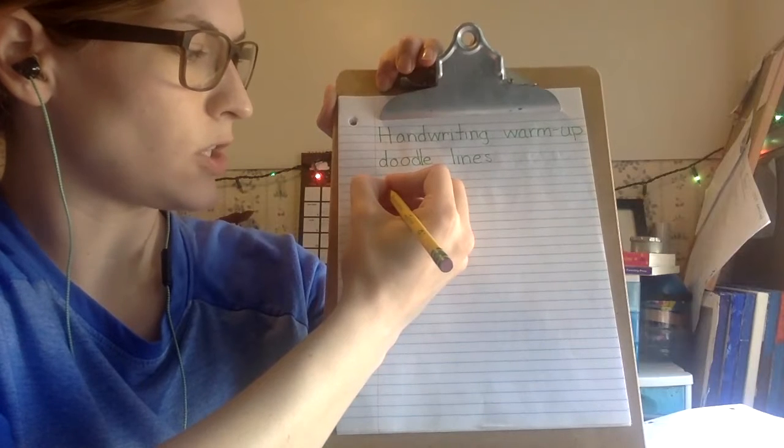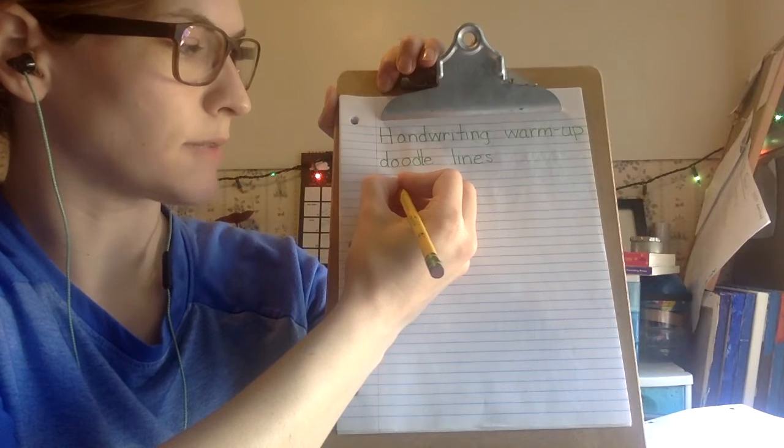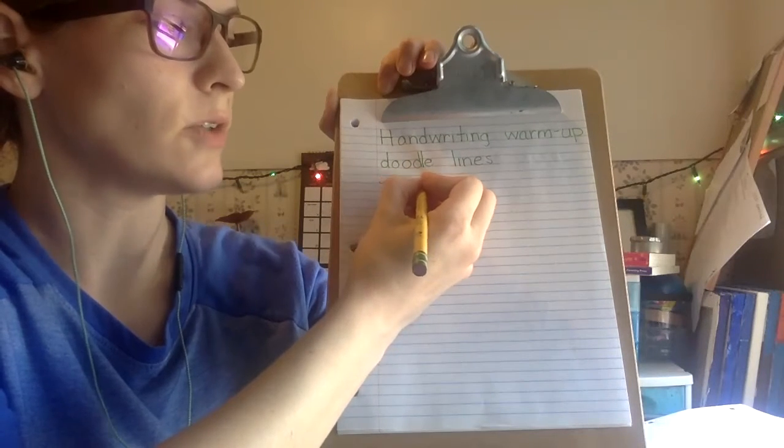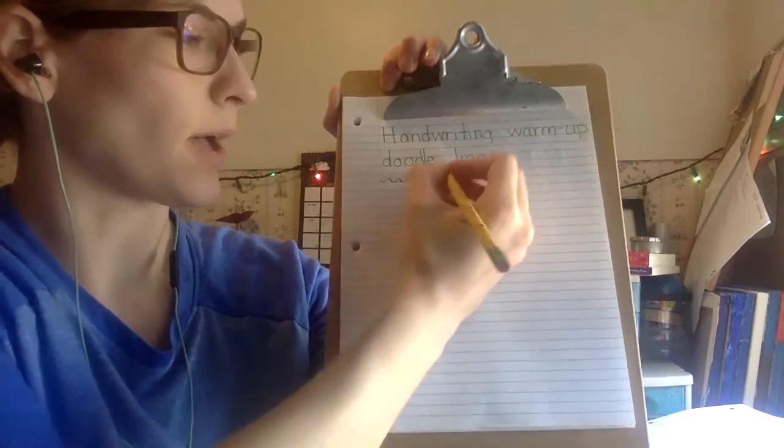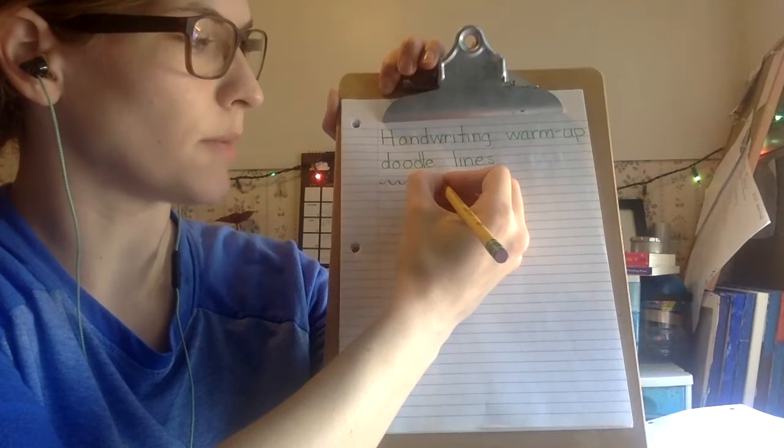For this first one make U curves and rainbow curves that fit in the small letter space. You'll notice that I did my small letters above where I wrote handwriting warm-up doodle lines.